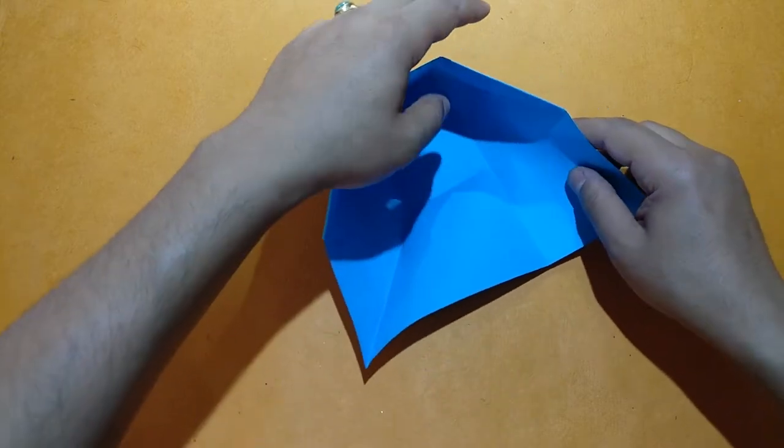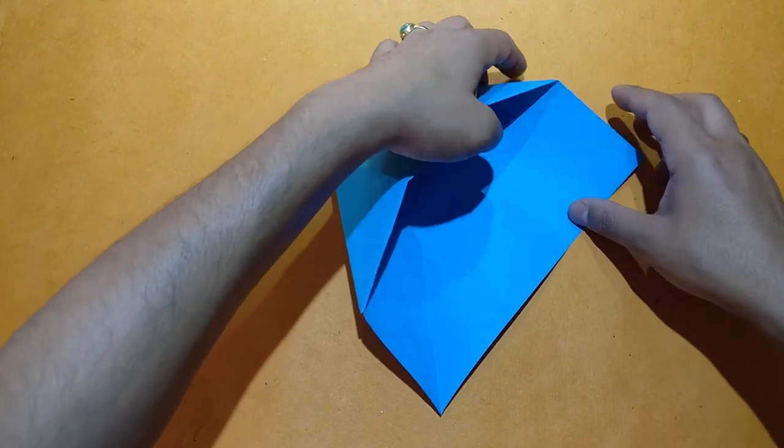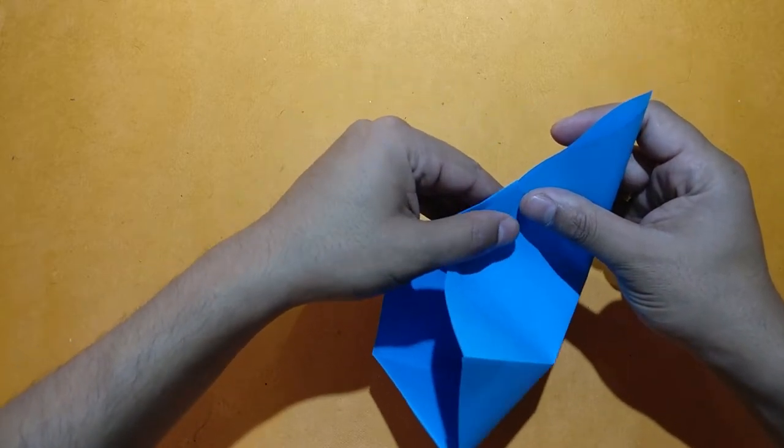You need to do the same thing on the other side. Join these two points and again you can see a triangle coming out.